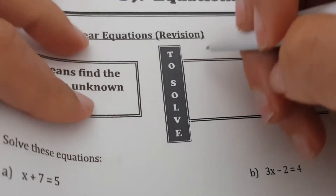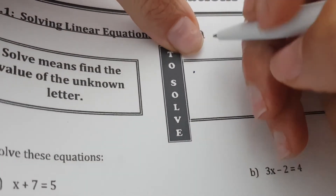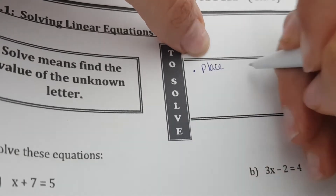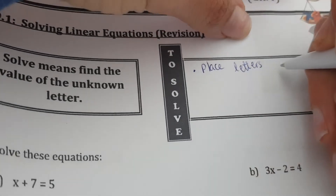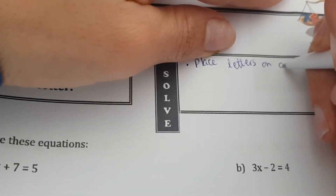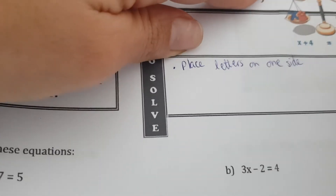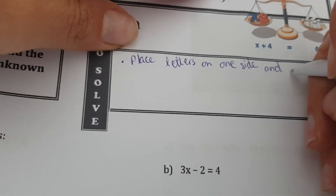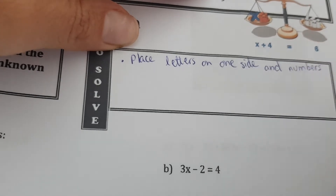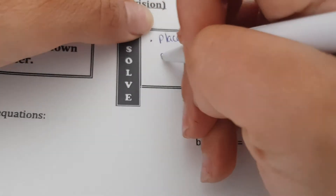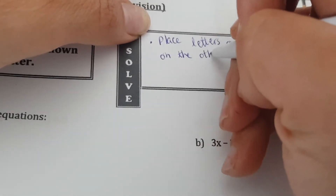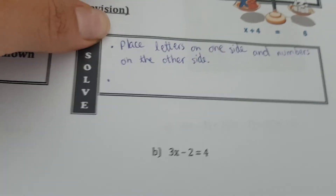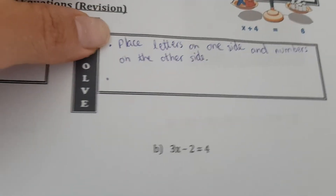So to solve, we need to place letters on one side and the numbers on the other side.